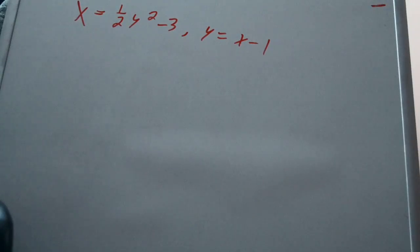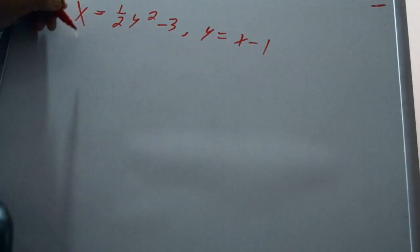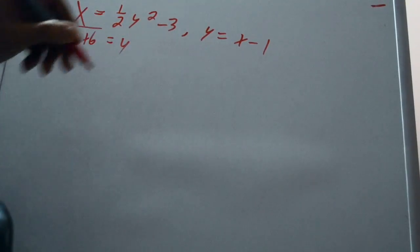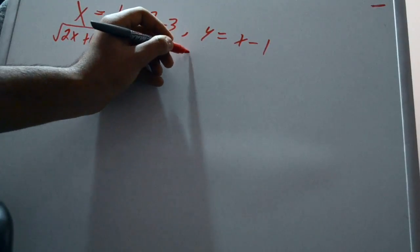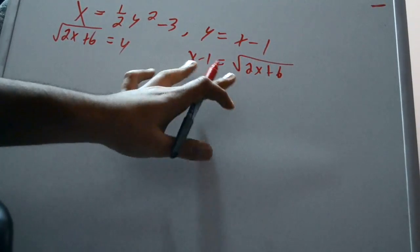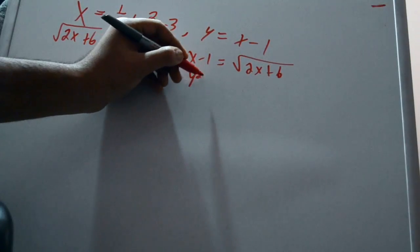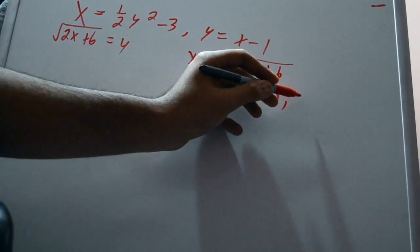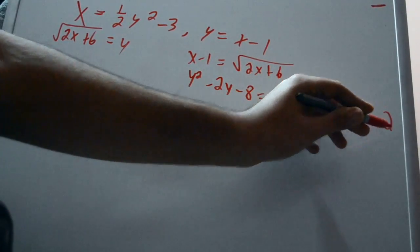We're going to solve the parabola equation for y. We get y equals the square root of 2x plus 6. Setting both expressions equal to one another — x minus 1 equals the square root of 2x plus 6 — then squaring both sides, we eventually get y-squared minus 2y minus 8 equals zero.